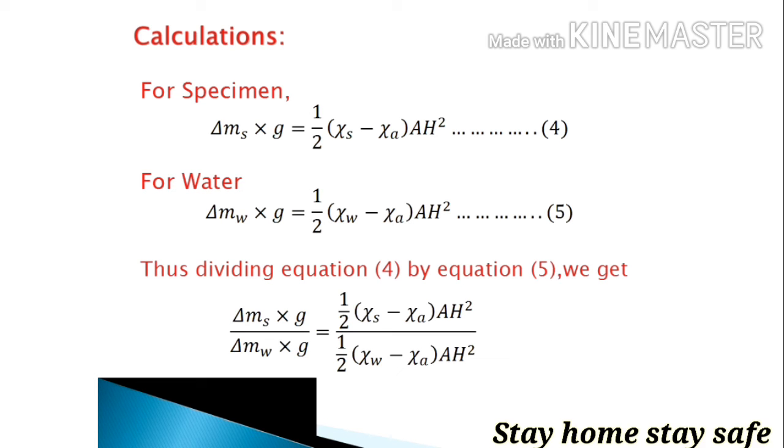Then we fill water into the same capillary and find out the difference in weight before and after application of magnetic field. We get equation as Δm_W times g equals one-half times (χ_W minus χ_A) times AH squared, as equation number 5.